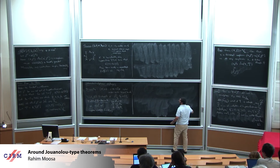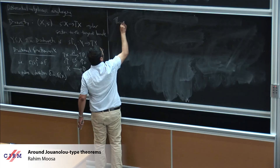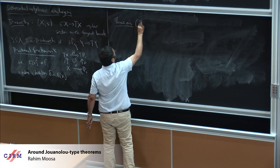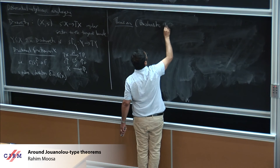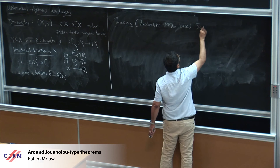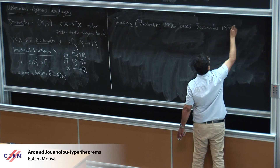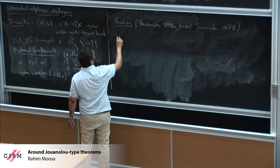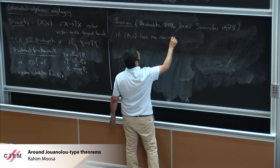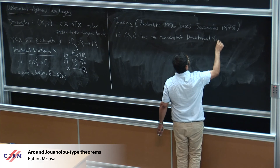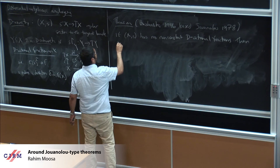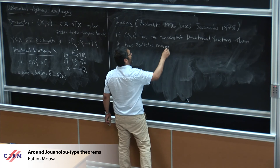There's a theorem of Rżewski from an unpublished 1996 manuscript, based on Juan Lu's theorem of 1975 or 1978, which says: if (X, S) has no non-constant D-rational functions, then it has only finitely many D-hypersurfaces — codimension-one sub-varieties preserved by the vector field. This is somewhat analogous to Kantat's statement.